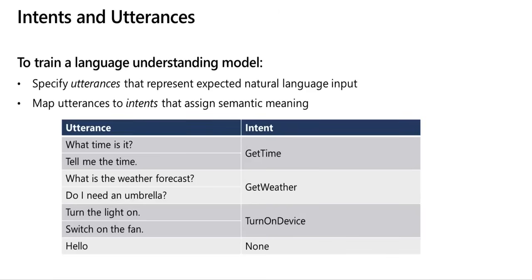For example, if the user says 'What time is it?' or 'Tell me the time', these are utterances and the intent is 'get time'. If the user asks 'What is the weather forecast?' or 'Do I need an umbrella?', the intent of these utterances is 'get weather'. Similarly, the intent to 'turn the light on' or 'switch on the fan' is 'turn on the device', and the intent of 'hello' is 'none'.